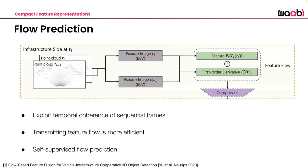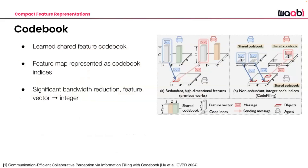Some recent works approach compression differently. Rather than compressing each message independently, you can leverage the fact that messages are sent sequentially — compute the flow between two consecutive point clouds and compress it into a sparse representation. This sequential compression can be more effective than per-frame compression. Similarly, other work uses a shared codebook of features known across all nodes in the network, enabling much more compact messages than full compression each time.